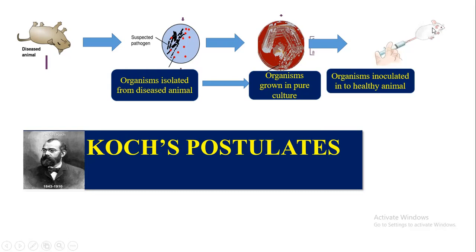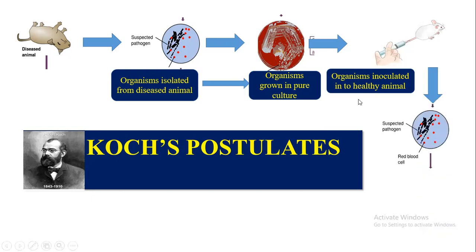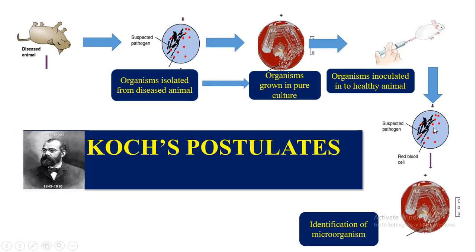The third postulate: from the pure culture, this suspension should be inoculated into a laboratory animal. When we inoculate this suspension into a healthy animal, it should produce the suspected pathogen and cause disease.